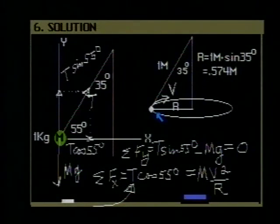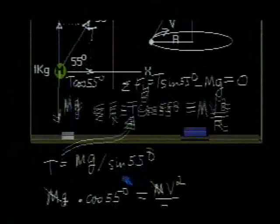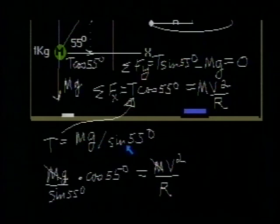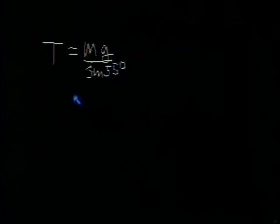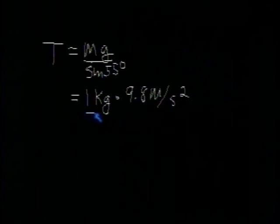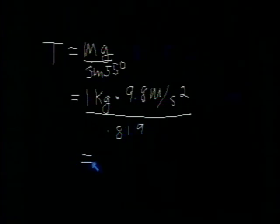In part B, we're asked to find what is the tension in the string. Now, in this expression here, we had solved for the tension. It's equal to mg divided by the sine of 55 degrees. So let's use that then to simply calculate what the tension is. T then is equal to mg divided by the sine of 55 degrees. That's equal to M was 1 kilogram, G is our familiar 9.8 meters per second squared. We divide that by the sine of 55 degrees, which is 0.819. And if you work that out, you should find to three significant figures that the tension in the string then is 12 newtons.